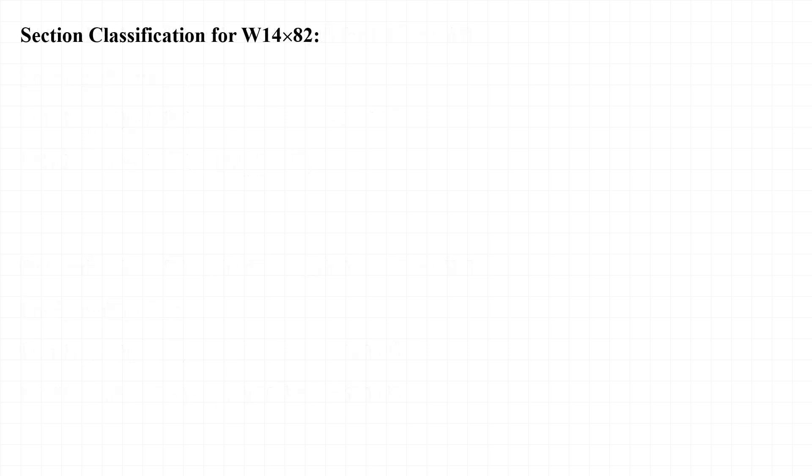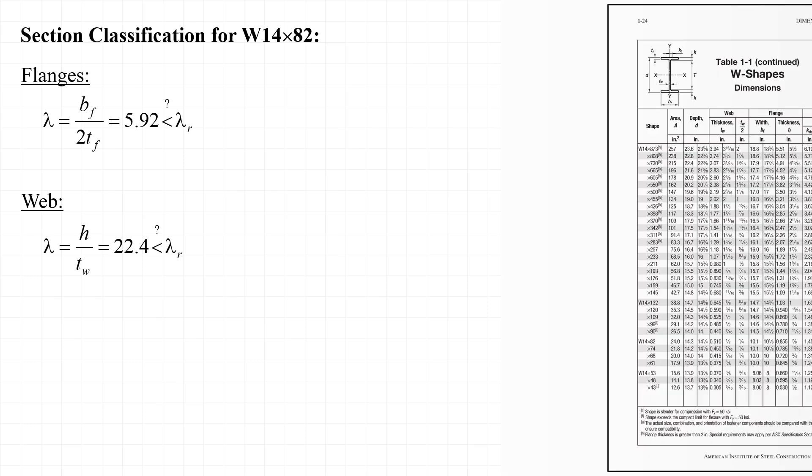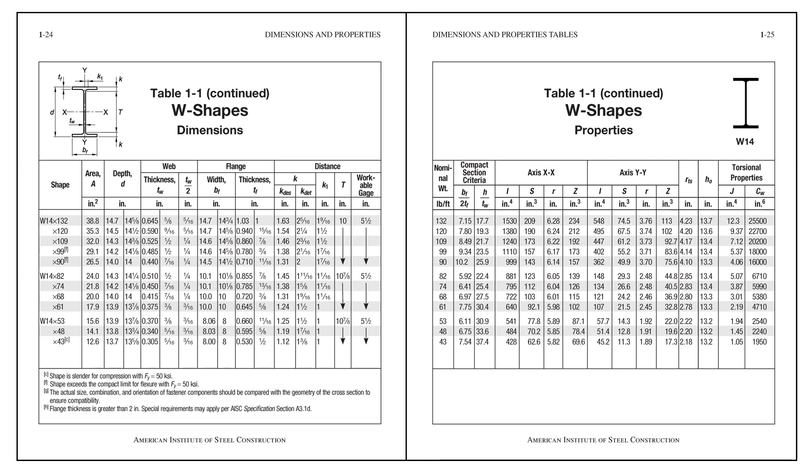As the first step in calculating the available strength of the column, I'll check the flanges and the web of the W14 by 82 to see if they're classified as slender or non-slender for compression. For the flanges, we have B sub F over 2T sub F equal to 5.92 and for the web, we have H over T sub W equal to 22.4. We can find these values tabulated in part 1 of the AISC manual. Zooming in a bit and looking more closely at the W14 by 82, we see that B sub F over 2T sub F is tabulated as 5.92 and that H over T sub W is tabulated as 22.4.